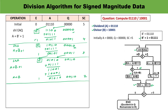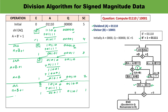Perform shift left again. After shifting, E becomes 0, A becomes 01010, and Q becomes 01100. Since E is 0, add B̄+1 (01111) into A. After addition, carry 1 is generated, so set Q0 to 1 — Q becomes 01101. Sequence counter decrements to 1.